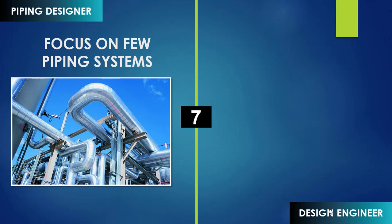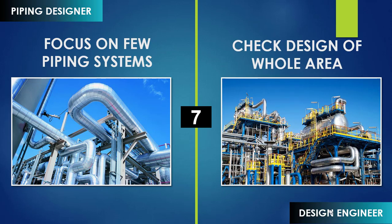Piping designers focus on fewer piping systems. For example, a piping designer develops a design for a particular line and their focus goes entirely onto that line. The role of a design engineer is to check the design from its totality — checking the design of the whole area, whether the design of one particular line impacts another, and whether changes are needed to achieve cost cutting or to improve the entire design of the whole area.